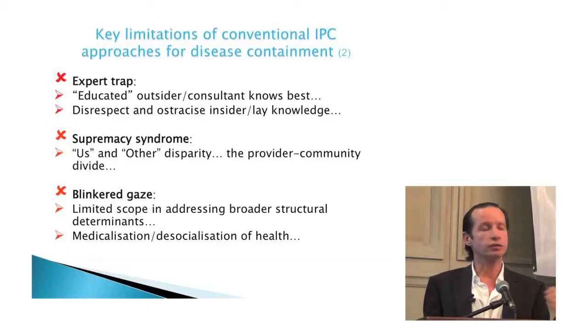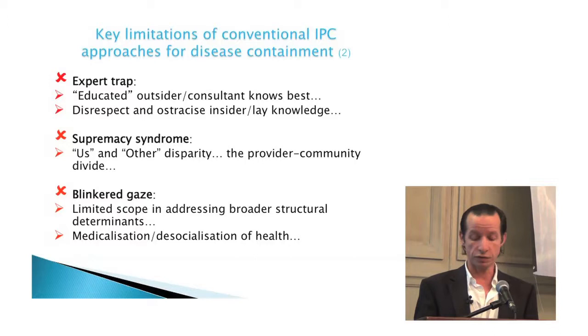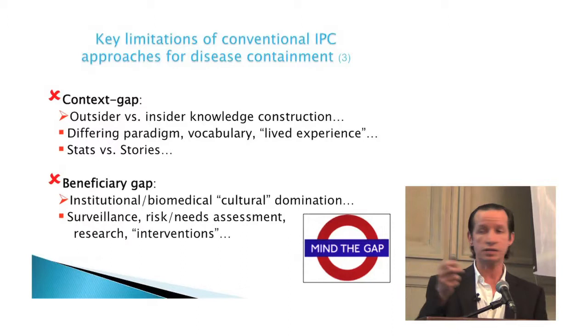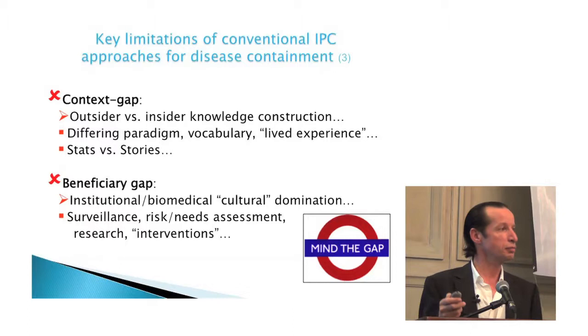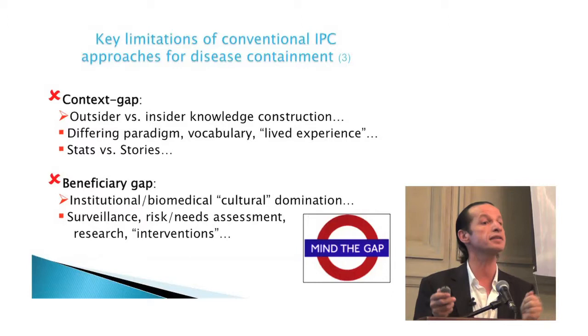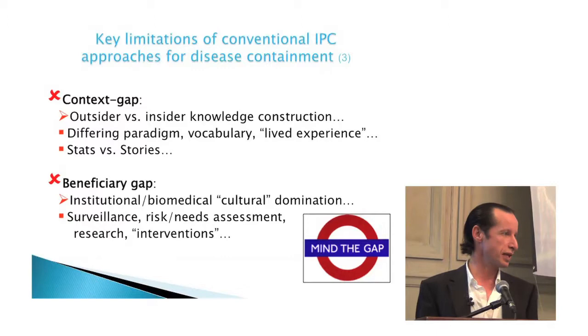There's a disrespect and non-validation of real community knowledge. We think we're very clever — 'I know this, you know nothing' — and of course that divide between us and them starts breaking down trust. Because of that, we have a very narrow view of looking at Ebola or any other IPC matter. We don't look at the broad determinants of the problem, we start to medicalize people's health and take out the social components. We have a huge gap between insider views — the community — and outsider so-called experts. We construct knowledge differently.